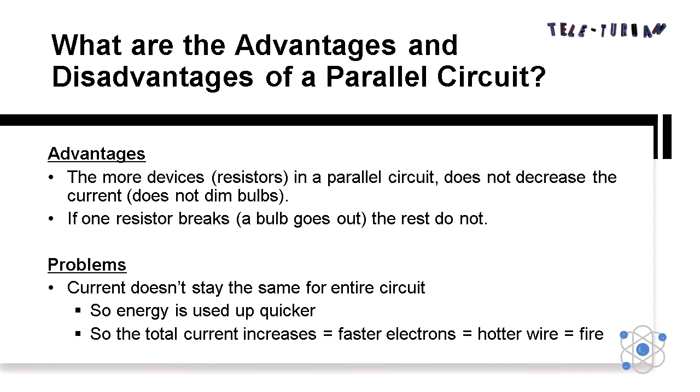Disadvantages: Current doesn't stay the same for the entire circuit. So energy is used up quicker. The total current increases. Faster electrons, hotter wire, which may sometimes cause fire.